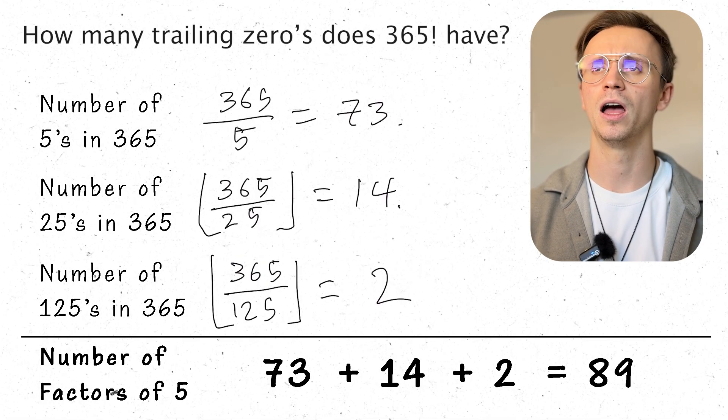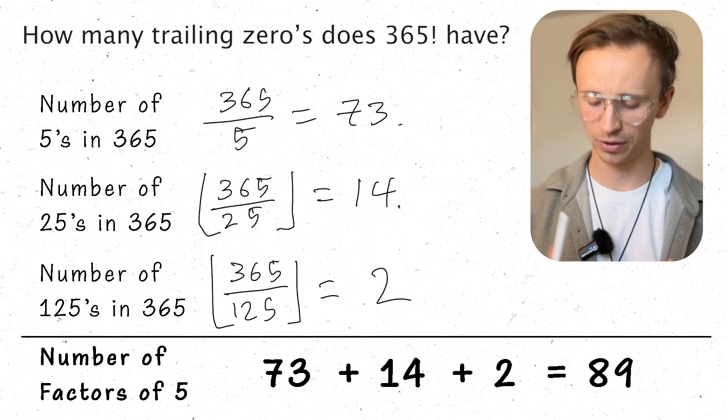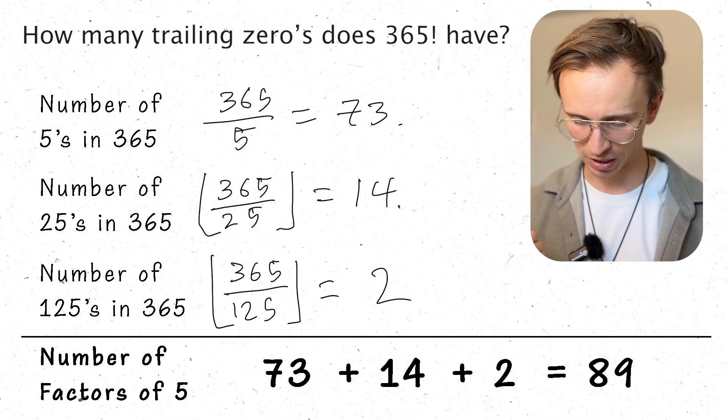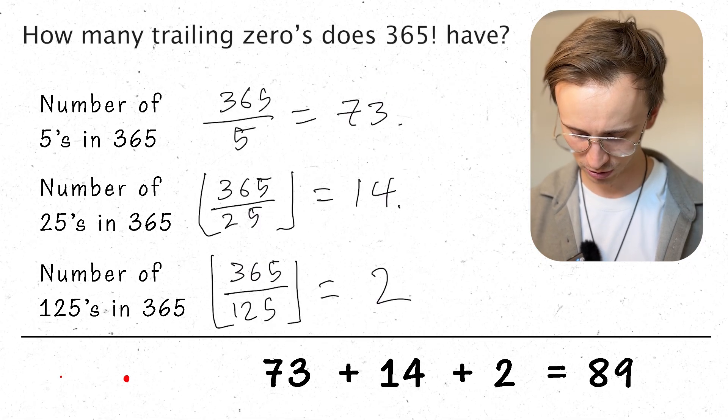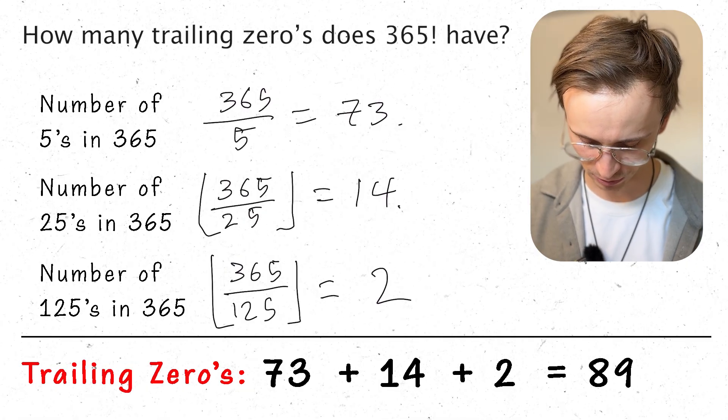There's no other way to get a 10, only through a 5 times a 2. That's how many 5s I've got. So there must be 89 trailing zeros. So I'm going to say 89 trailing zeros.